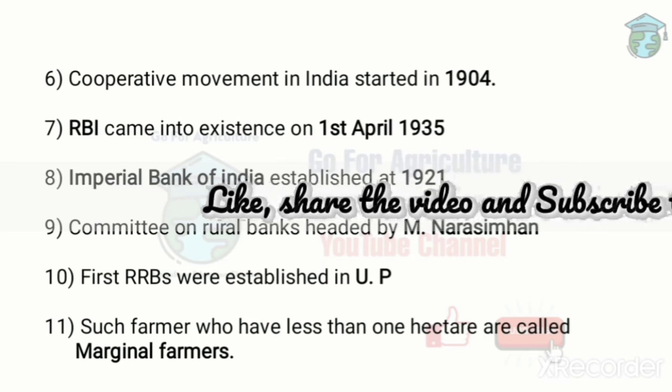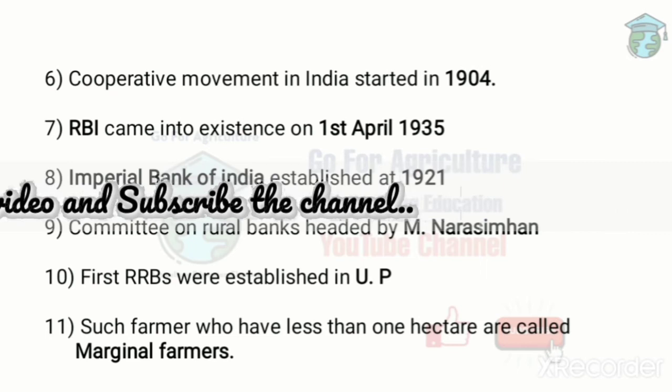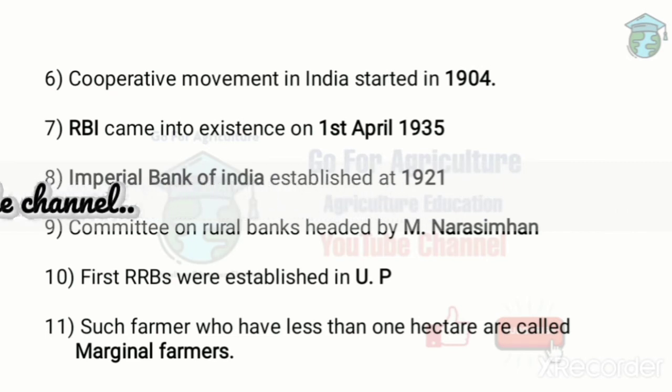The committee on rural banks was headed by M. Narasimham, under which the Regional Rural Banks (RRBs) were formed. The first RRB was established in Uttar Pradesh, specifically in Moradabad. The objective of RRBs is the provision of credit and other facilities to small and marginal farmers.